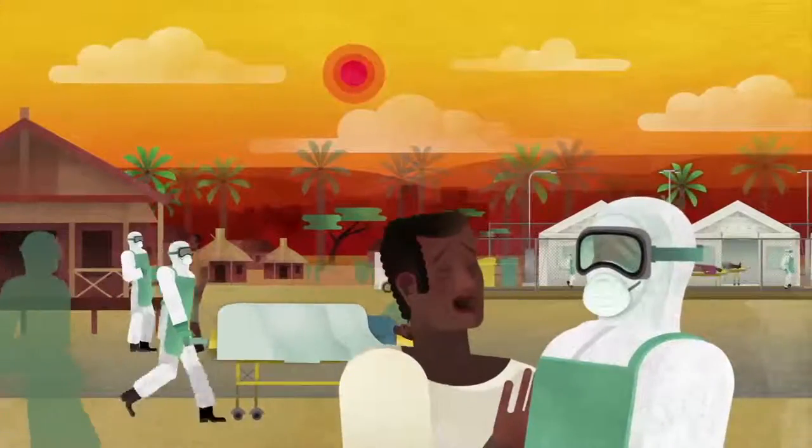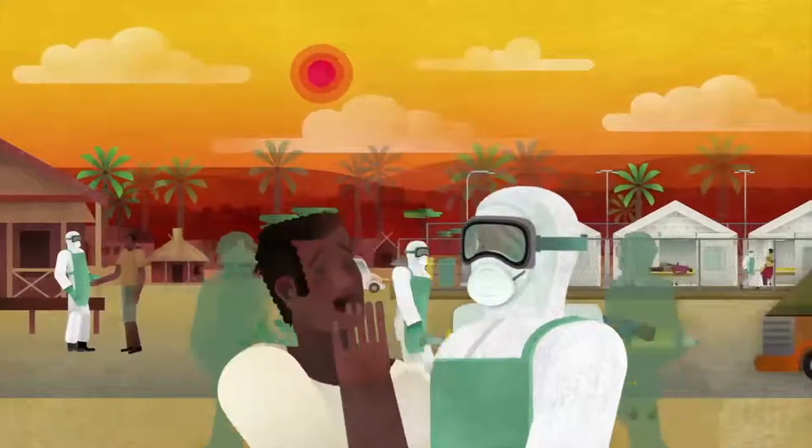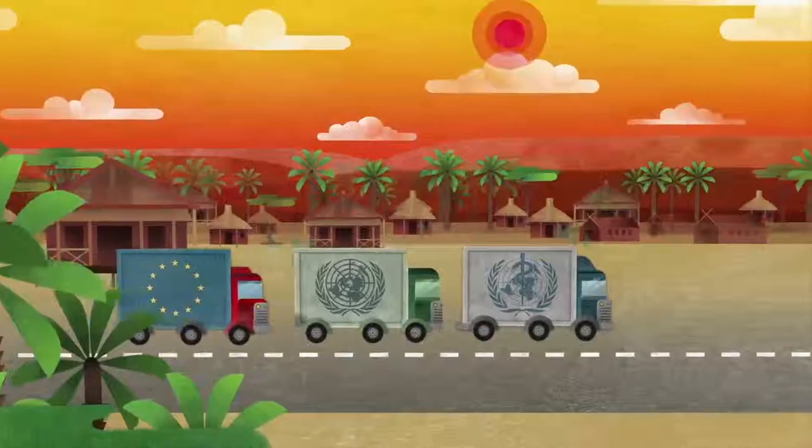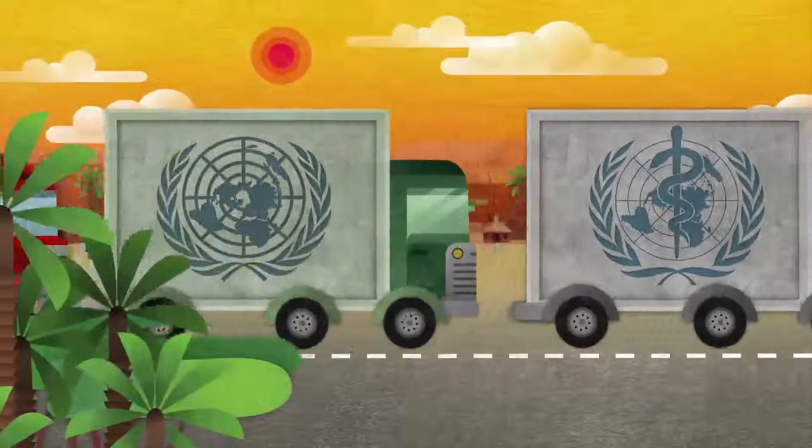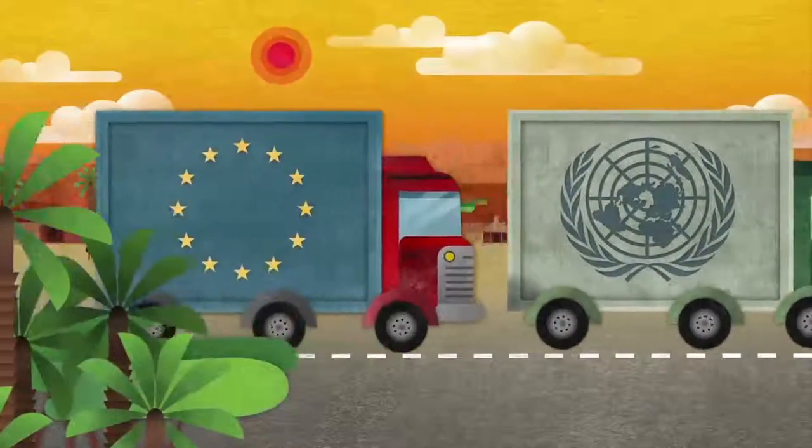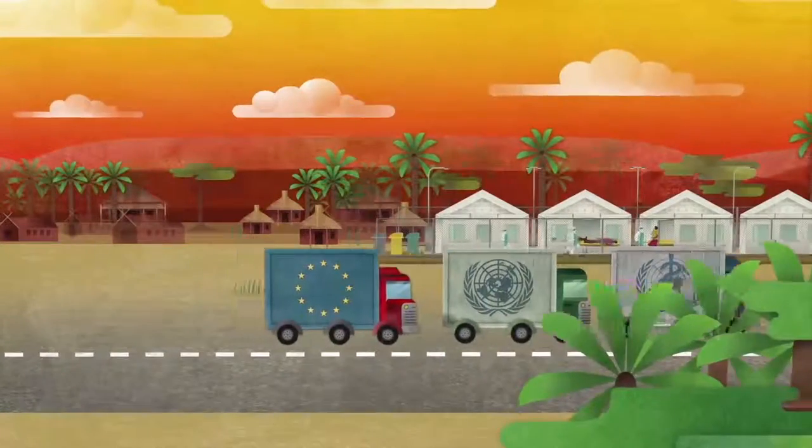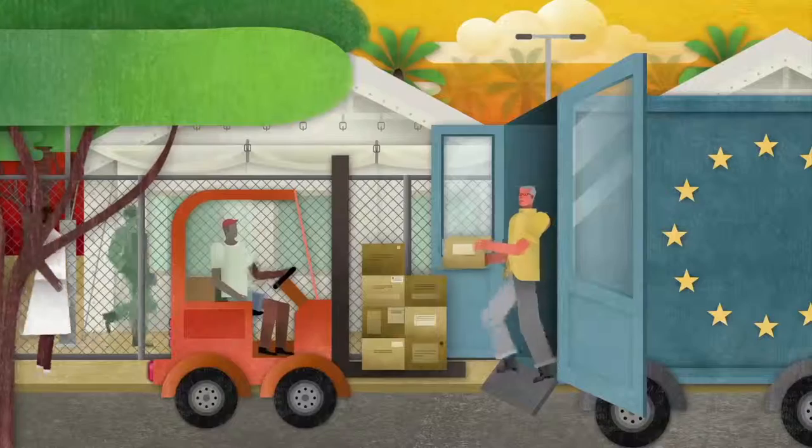The most effective way to protect the rest of the world from Ebola is to control the outbreak in West Africa. The World Health Organization, United Nations and the European Union are working tirelessly to support the affected countries in West Africa